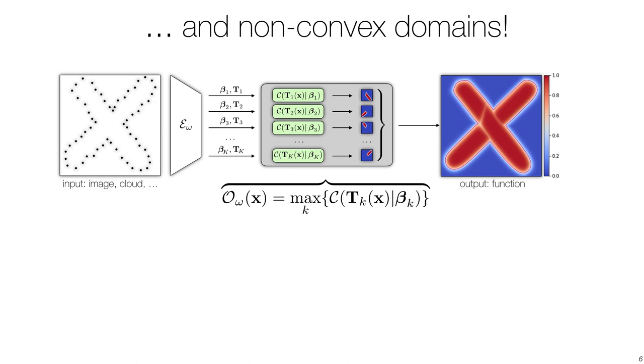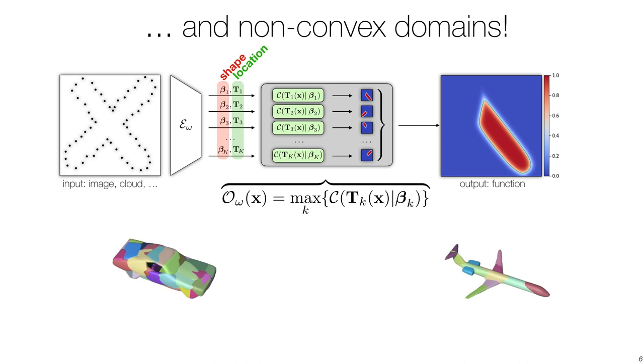In our encoder, we output two sets of quantities: parameters beta that correspond to the shape of convexes, and transformations t to express the location in space.